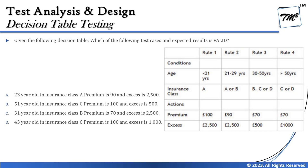Option A: 23-year-old → Rule 2, insurance class A or B (yes), premium 90, excess 2500 — that matches the table correctly. Option B: 51-year-old → Rule 4, insurance class C (yes), but premium should be 70, not 100 as stated — wrong. Option C: 31-year-old → Rule 3, class B (yes), premium 70 (yes), but excess is 500 not 2500 — wrong. Option D: 43-year-old → Rule 3, insurance class C (yes), but premium should be 70, not 100 — also wrong. So Option A is correct.